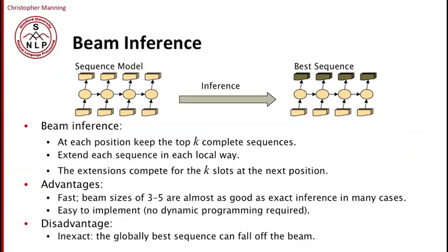One method is beam inference. So at beam inference, at each position, rather than just assigning the most likely label, we can keep several possibilities. So we might keep the top K complete subsequences up to the point where we're at so far. And so then at each stage, we'll consider each partial subsequence and extend it to one further position.